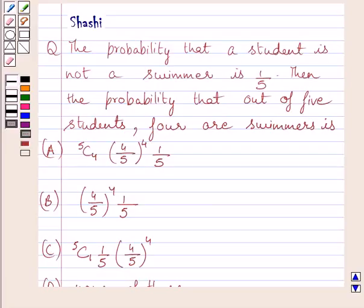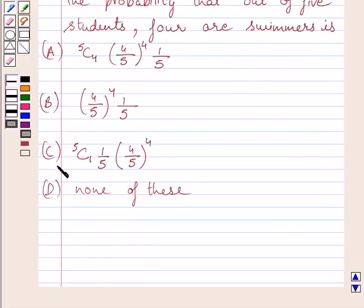Hello friends, welcome to the session. I am Shashi and I am going to help you with the following question. The problem states: the probability that a student is not a swimmer is 1 upon 5. Then, the probability that out of 5 students, 4 are swimmers is—we have to choose the correct answer from A, B, C and D.